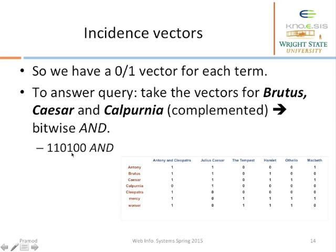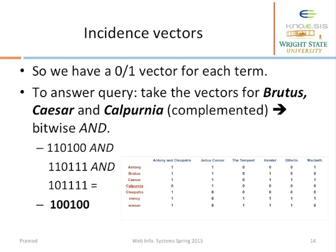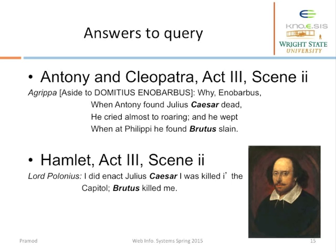The Brutus row is 1 1 0 1 0 1 0 0, and the Caesar row is 1 1 0 1 1 1. The last vector is the complement of the Calpurnia entry. Taking that complement and doing the AND operation, we end up with 1 0 0 1 0 0. This means the query Brutus AND Caesar but NOT Calpurnia results in two plays, and here are the excerpts from those two plays.